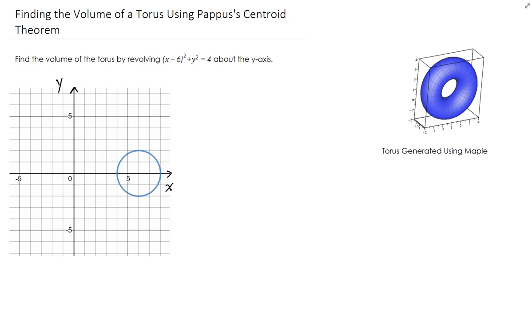All right, in this example, we are going to find the volume of a torus using Pappus' centroid theorem. To do this, we have the graph of the circle, which is given as x minus 6 squared plus y squared equals 4.